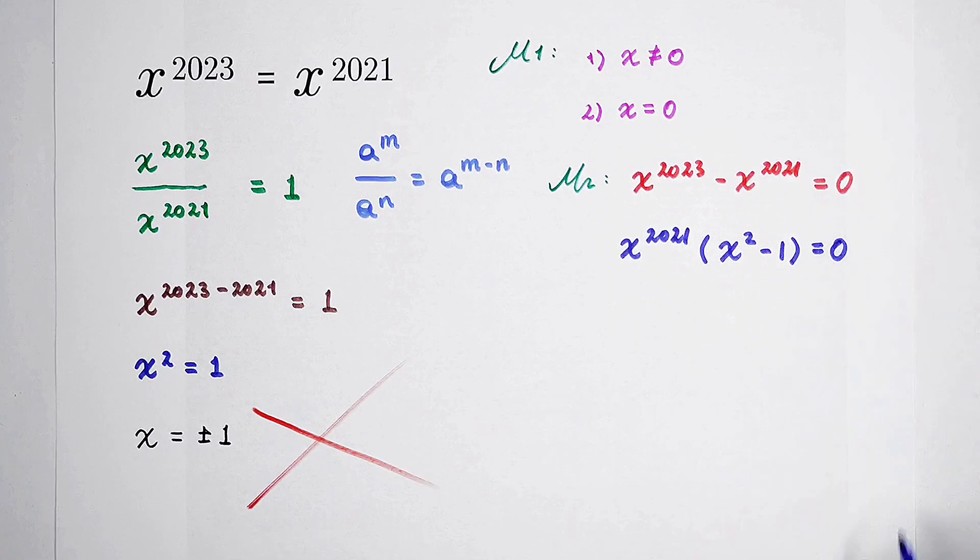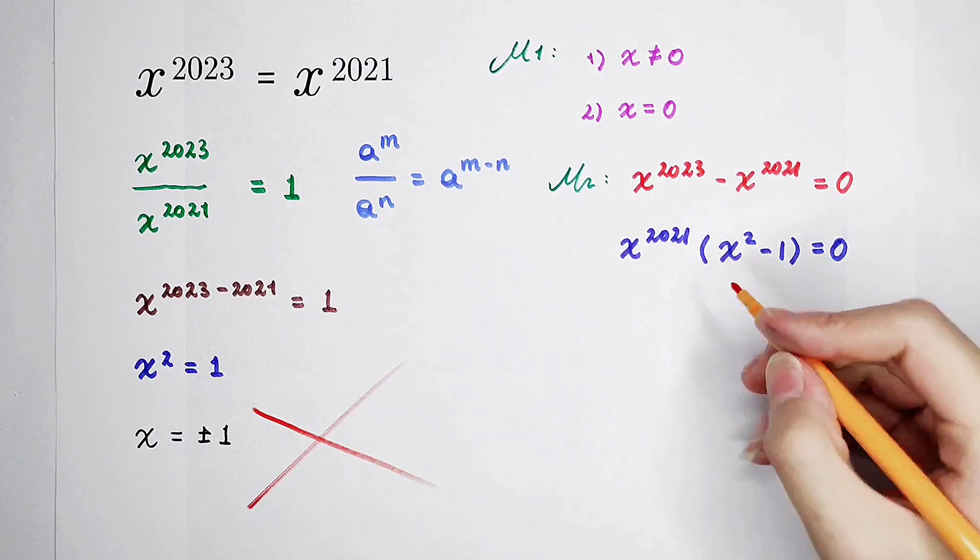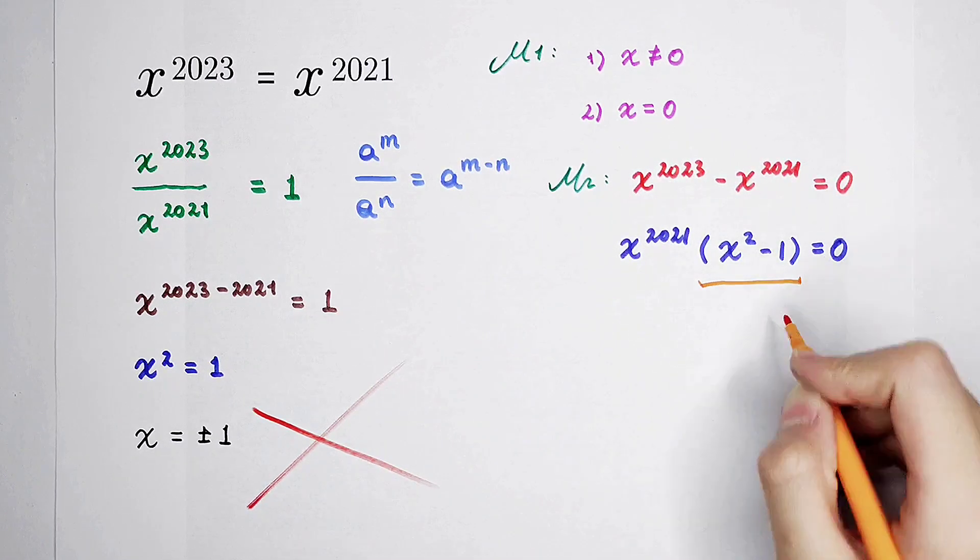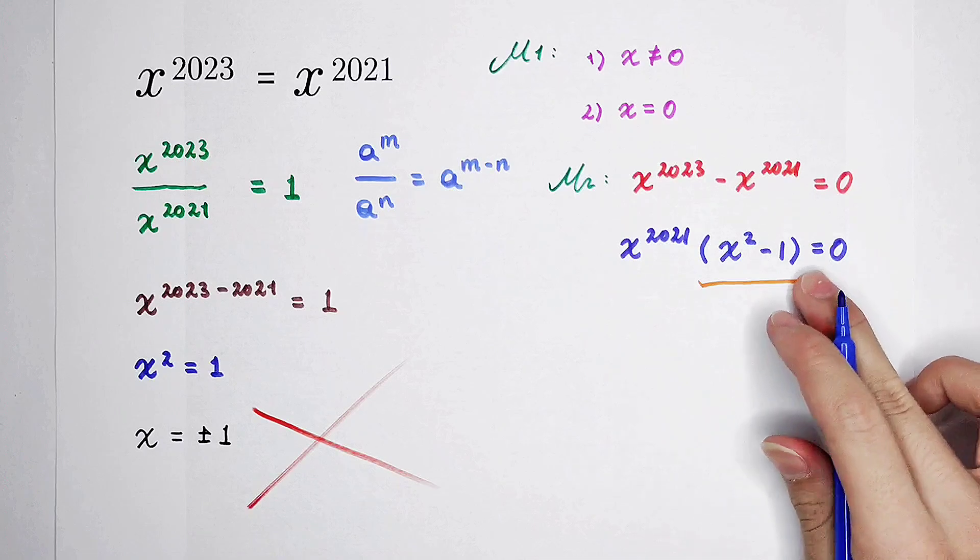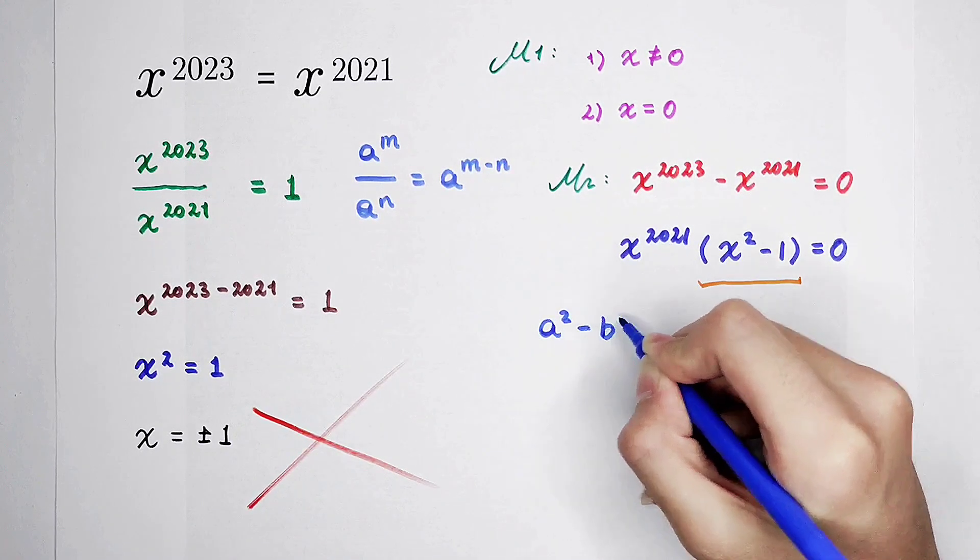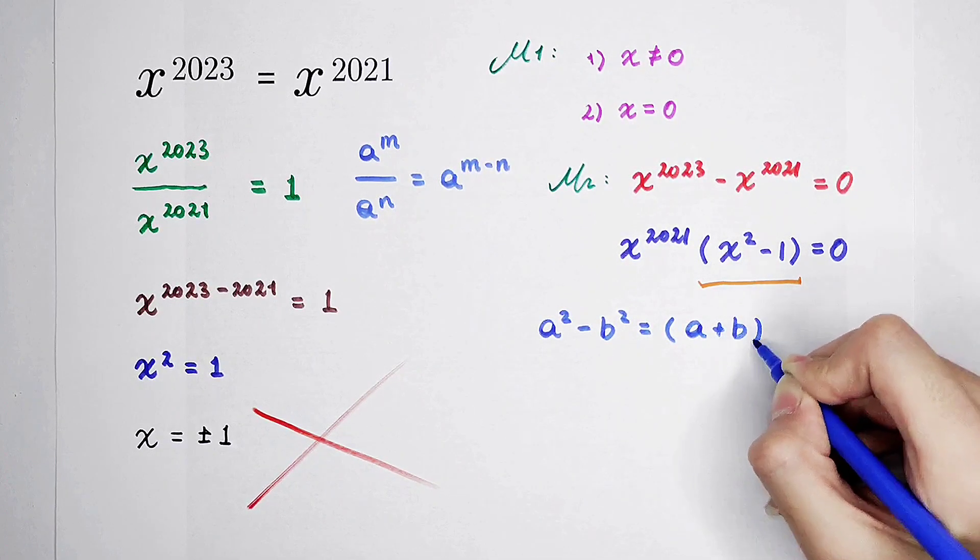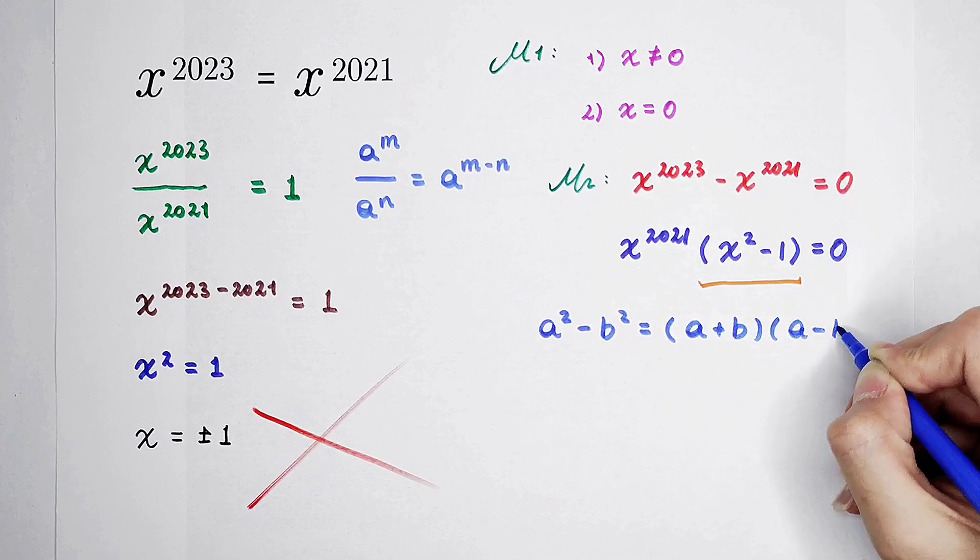So, now, our main line is to factorize the left-hand side. Now, factorize x squared minus 1. We all know that a squared minus b squared, the famous identity, is equal to a plus b and then times a minus b.